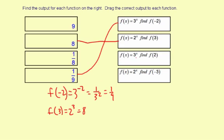f of x equals 3 to the x. Find f of 2. f of 2 equals 3 to the 2nd power, which equals 9. So f of 2 equals 9.